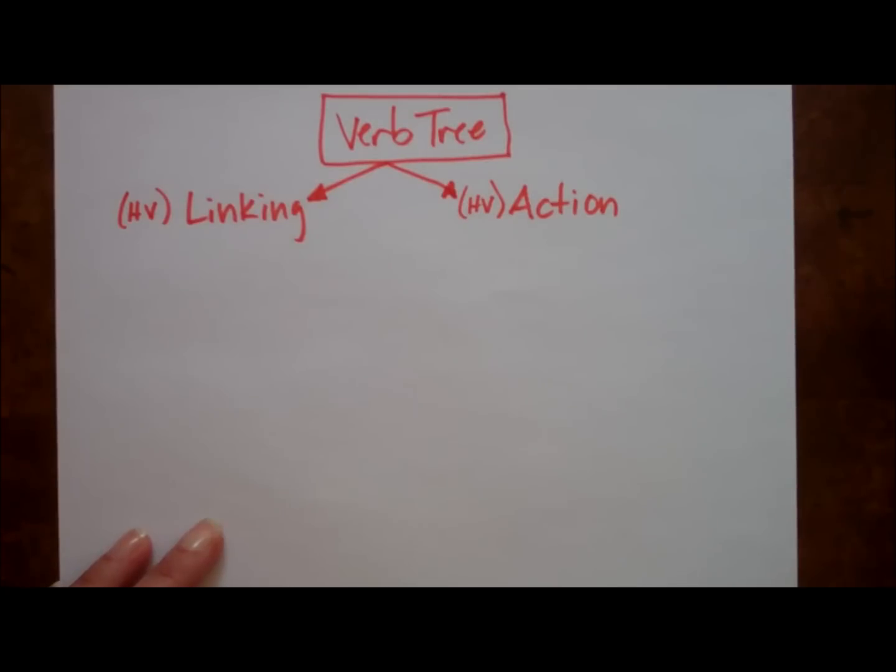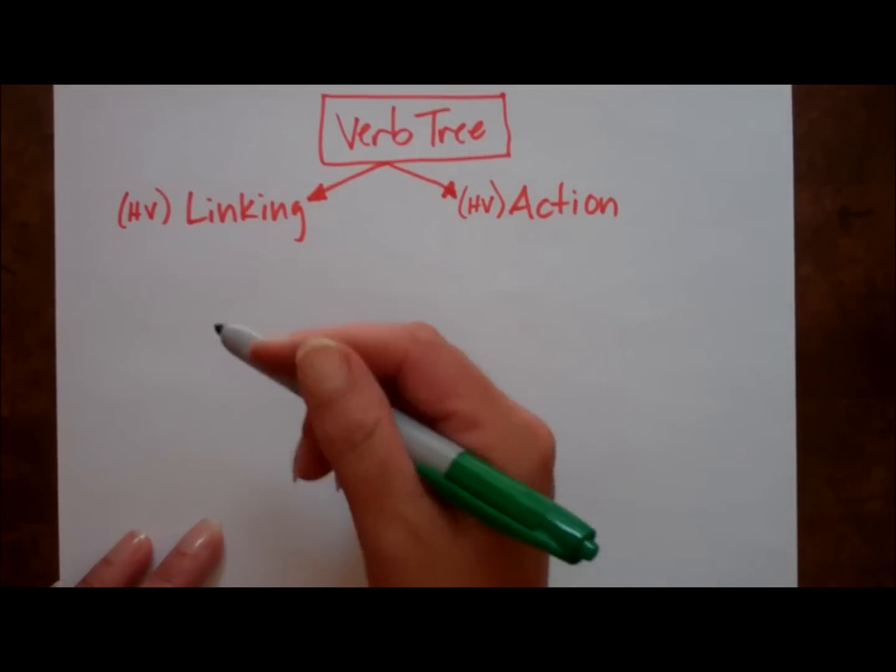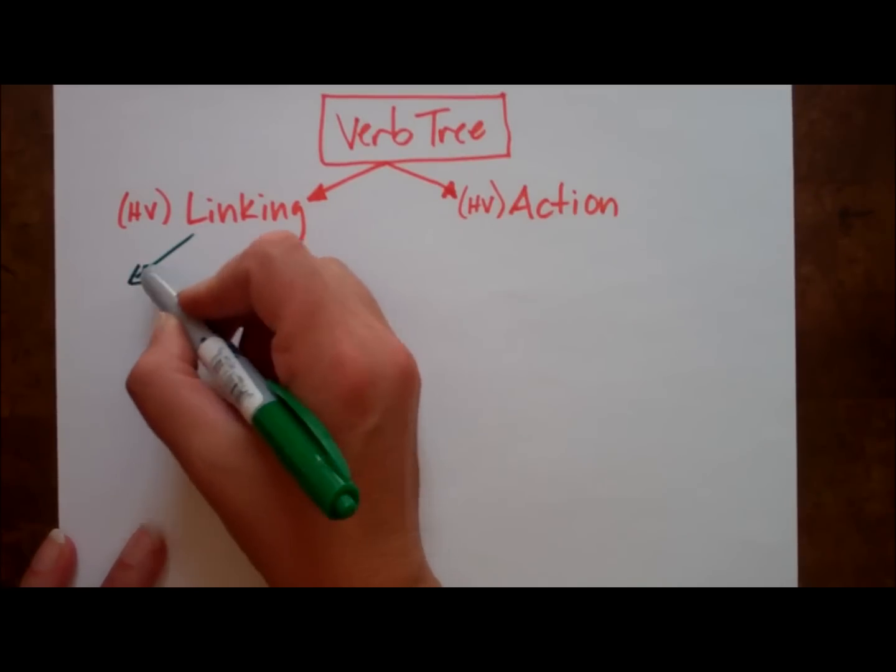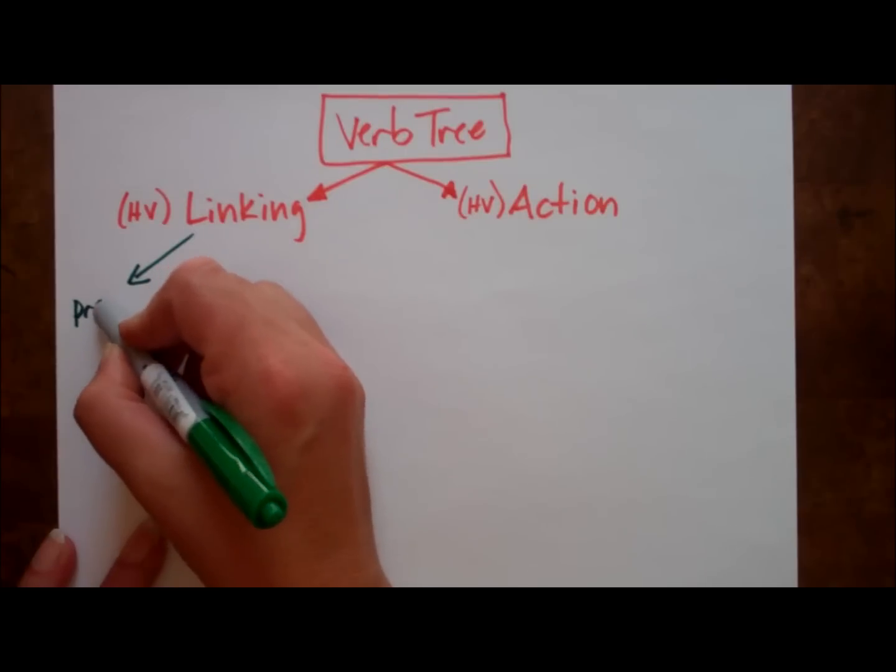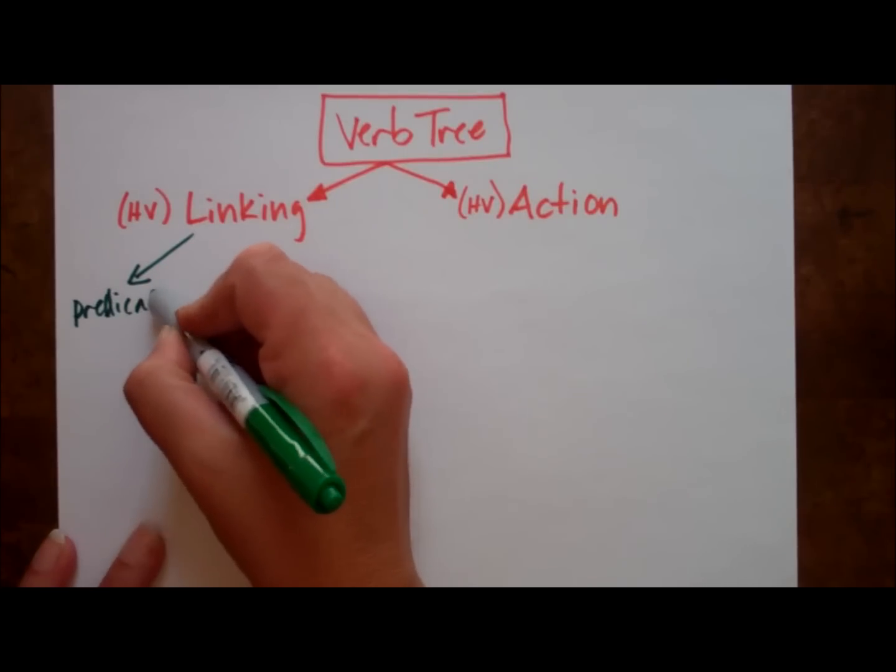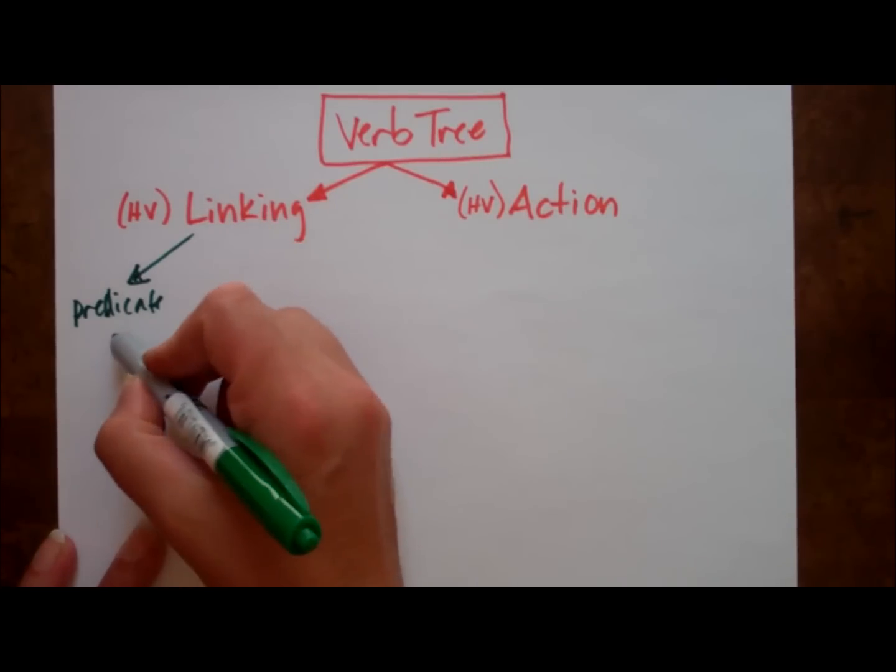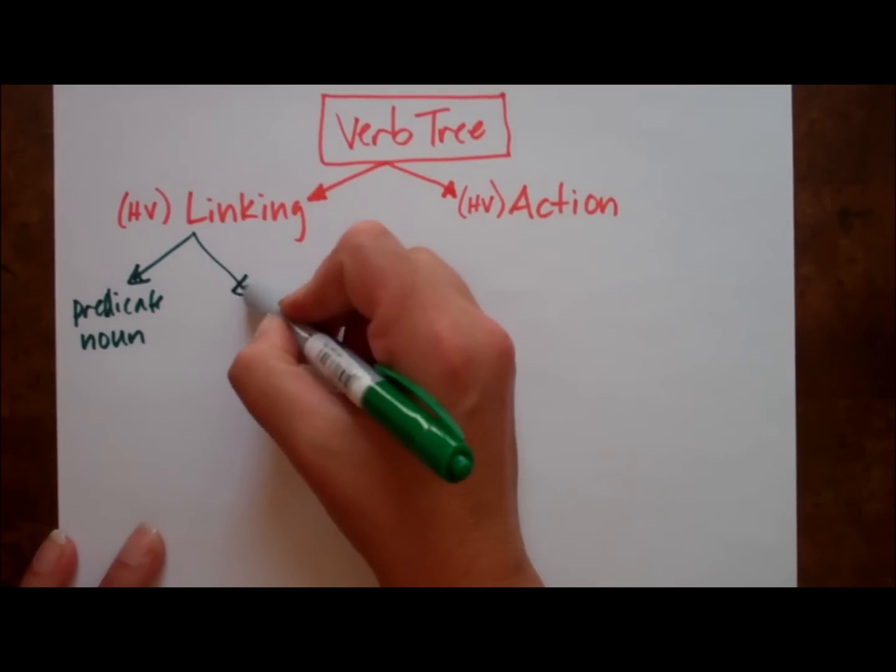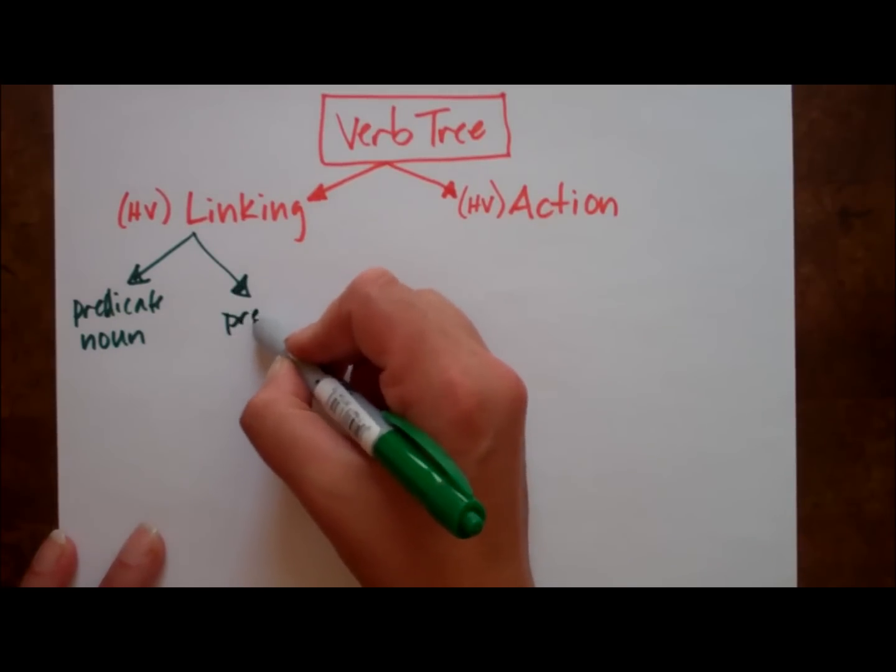Let's look at the linking branch first. If you have a linking verb, it will be followed by one of two things. Either a predicate nominative, or predicate noun, or a predicate adjective.